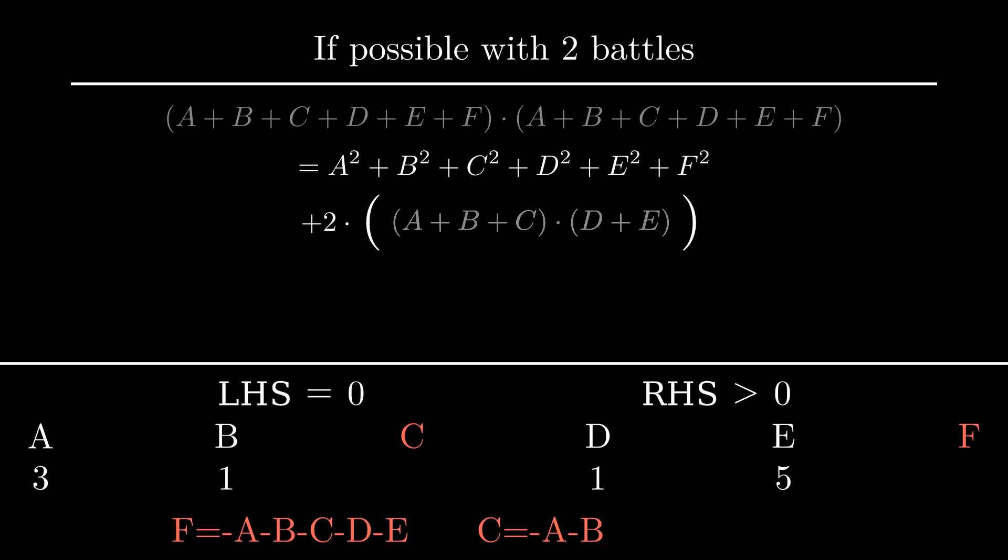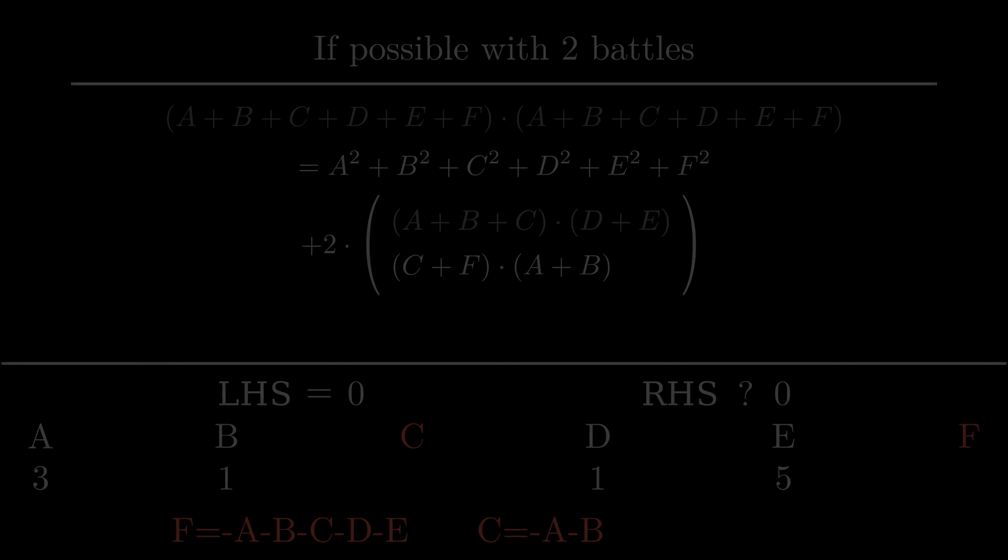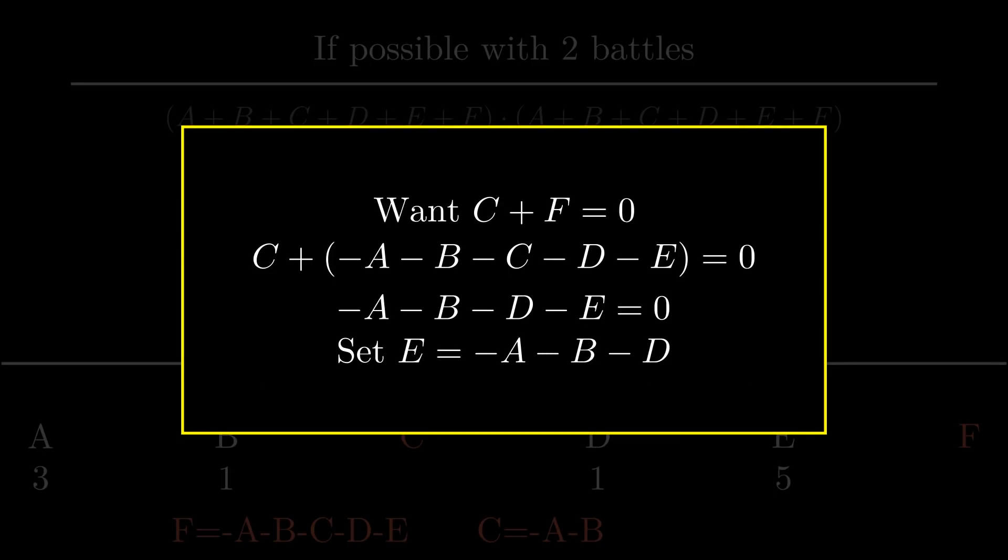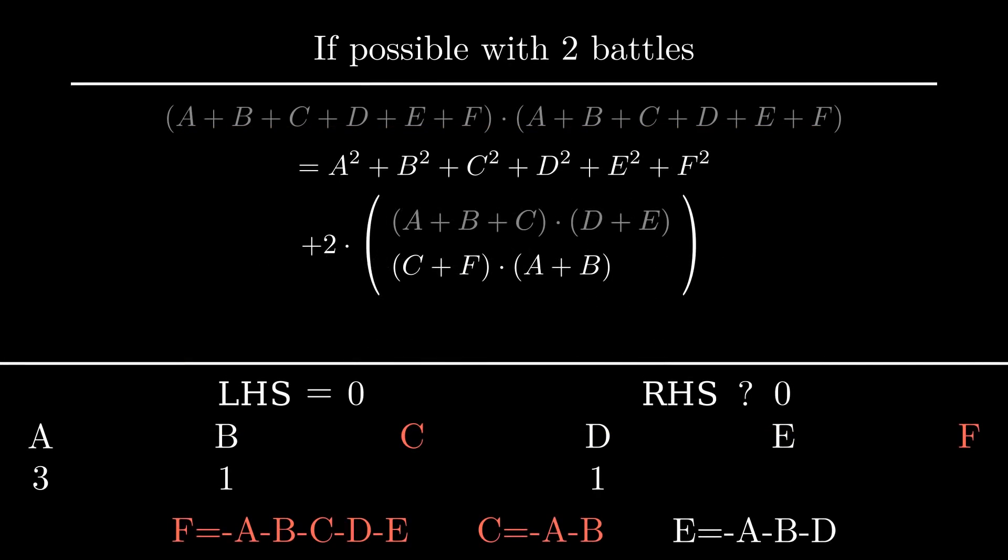Let's see an example. If the second battle had C+F, then we want to set C+F to be 0. But C and F are already set. Analyzing what they're set to, it's easy to see that C+F is the same as -A-B-D-E. So we can set E to the negative of A+B+D, and now the second battle is also 0. And so for our values, the RHS is greater than 0.